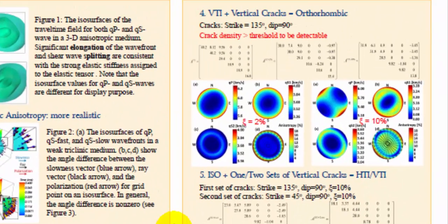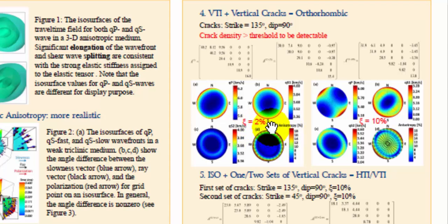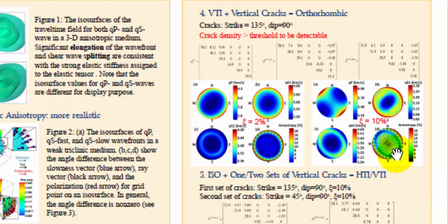Shale reservoirs are usually recognized as a VTI model — intrinsically VTI anisotropic. By adding vertical cracks, we change it from a VTI model to an orthorhombic model. Adding 2% crack density and adding 10% crack density can be compared. If we only add 2% crack density, we don't really change much of the phase velocity distribution. When we increase the crack density to 10%, we start to see the fast shear wave polarization begin to align along the direction of the crack and see stronger anisotropy in that direction. This demonstrates that in a shale reservoir, using fast shear wave polarization as an indicator of cracks is not very sensitive — there is a threshold, and the crack density has to be large enough to be detected.